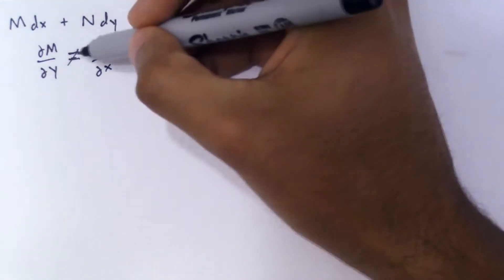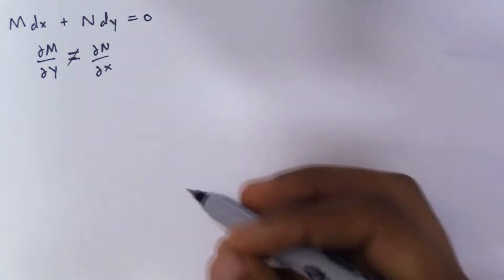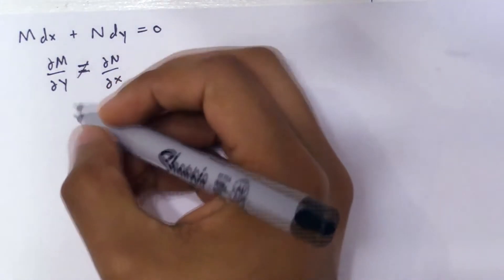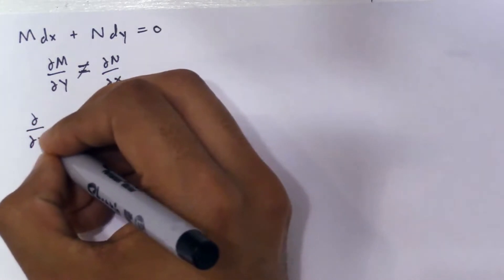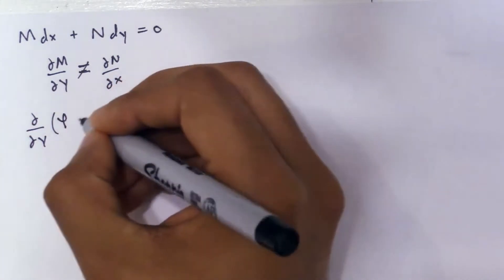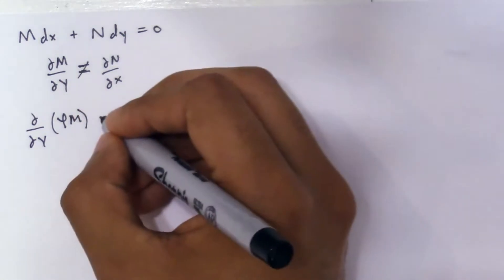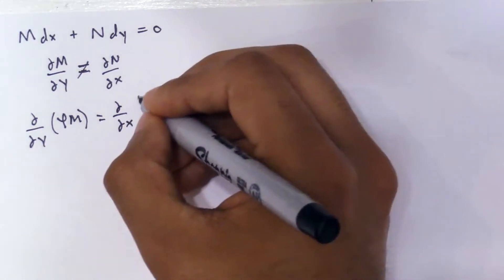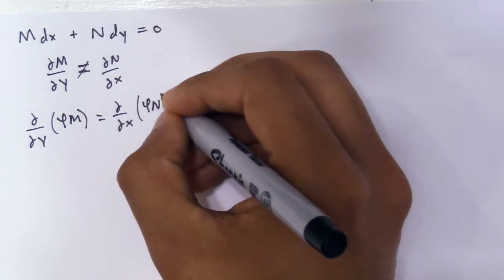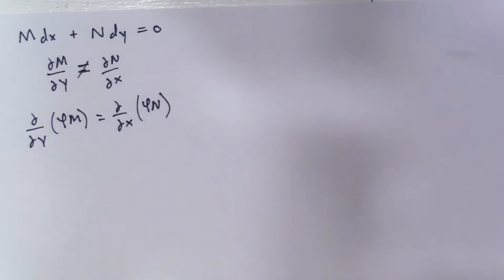For this to be equal, there has to be some sort of integrating factor that satisfies this equation such that these two are equal. So what I'm going to do — if you take the partial with respect to y of phi times M, and set that equal to the partial with respect to x of phi times N, then we can solve this equation.